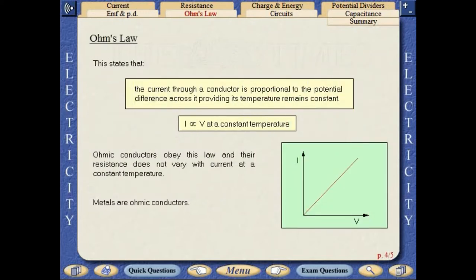Ohm's law states that the current through a conductor is proportional to the potential difference across it, providing its temperature remains constant. Ohmic conductors obey this law, and their resistance does not vary with current at a constant temperature. Metals are ohmic conductors.